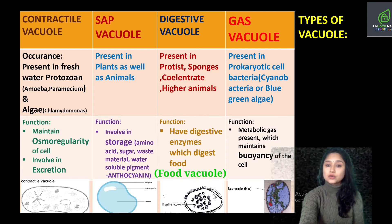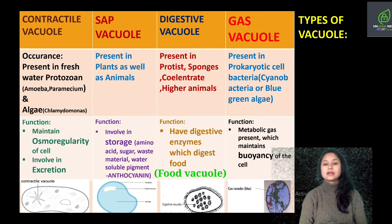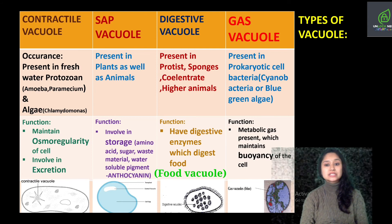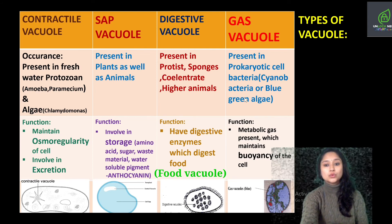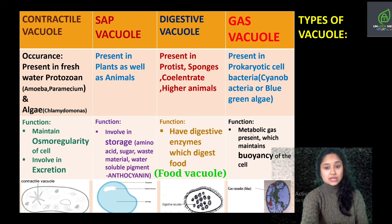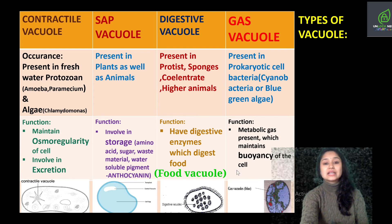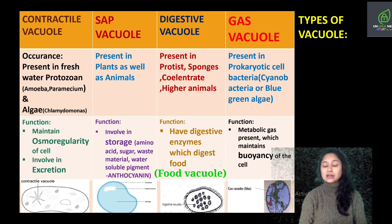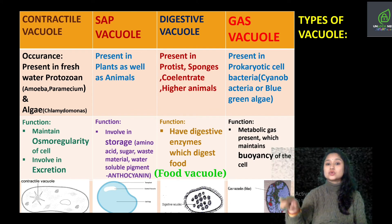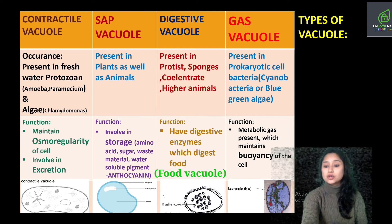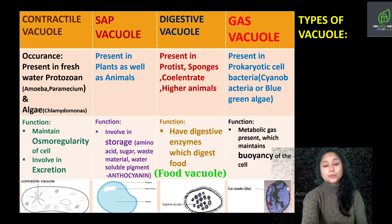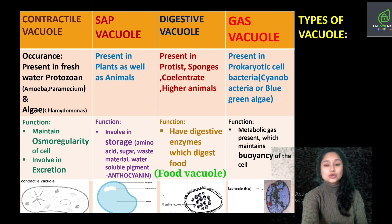The last category of vacuole is gas vacuole. Gas vacuoles are present in prokaryotic cells — bacteria like cyanobacteria or blue-green algae. This gas is utilized for maintaining the buoyancy of the cell. When we studied the prokaryotic cell in detail, it was mentioned that the membrane present here is considered to be a pseudo vacuole. It is called pseudo vacuole because its membrane is composed of only protein — it is not a true membrane. That is why the membrane present in gas vacuoles is said to be a pseudo vacuole.